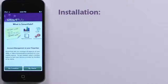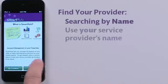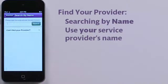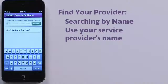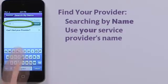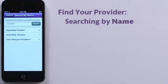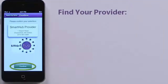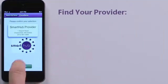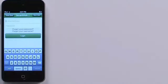Find your service provider by name or location when GPS is enabled. I'll search by name using Smart Hub as an example, but you'll need to enter your provider's name here. When you've found your provider, tap the Confirm button.